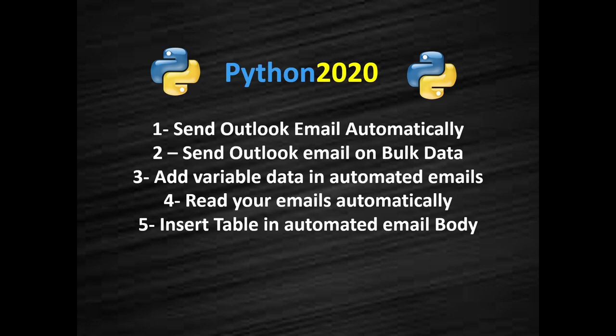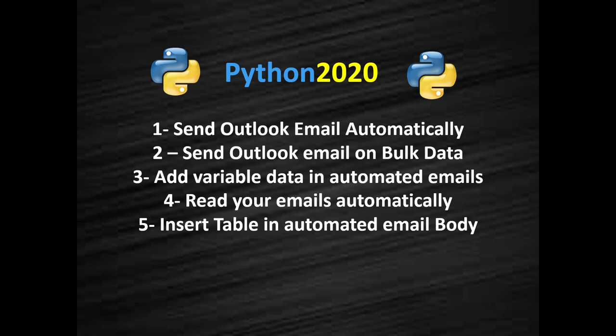I have already covered related topics on this channel: sending Outlook email automatically, sending Outlook email using bulk data (for 100 or 500 customers), adding variable data to a single template, reading the inbox, going through each email, downloading attachments into a structured folder. And today in this video we are going to see how to insert a table in automated emails.